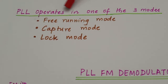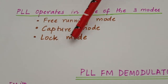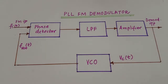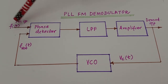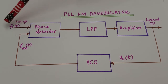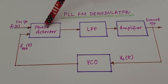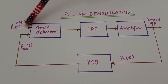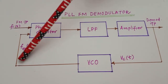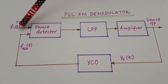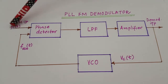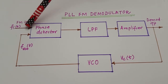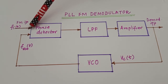A PLL operates in one of three modes: the free running mode, the capture mode, or the lock mode. A PLL is said to be in the free running mode when there is no input applied to it. There are two inputs that come to the phase detector — one is the external input and the other is the feedback input. When no external input is applied to the PLL, it is said to be in the free running mode.